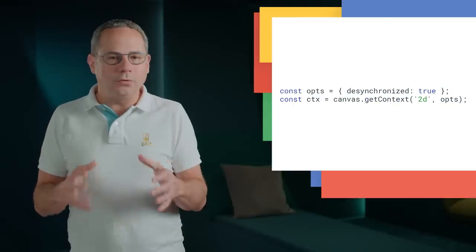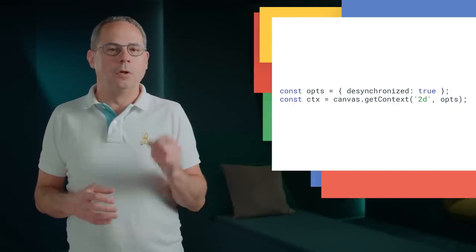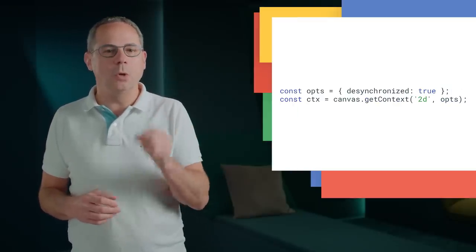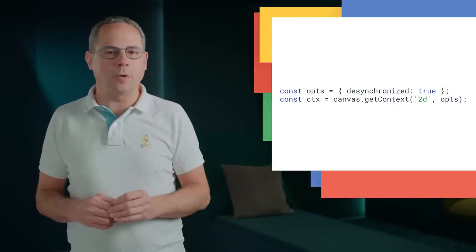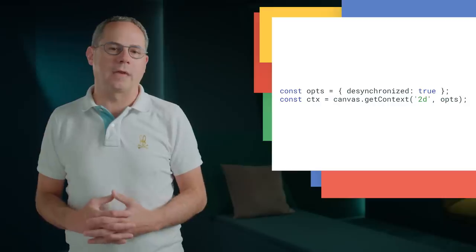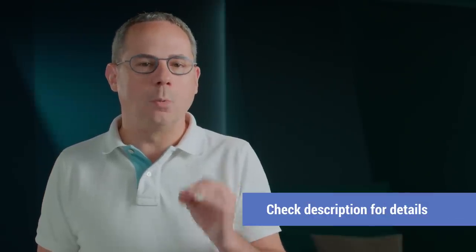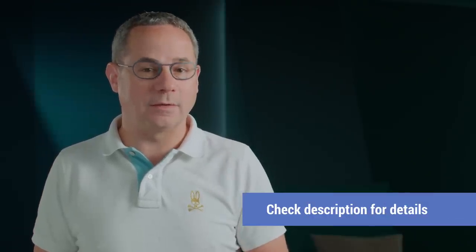This eliminates the latency caused by using the renderer compositor queue. Using the desynchronized hint is simple — just add desynchronized: true to the options object when creating the canvas. Check out Joe's article, Low Latency Rendering with the desynchronized hint, for more details, including how to do feature detection for it.